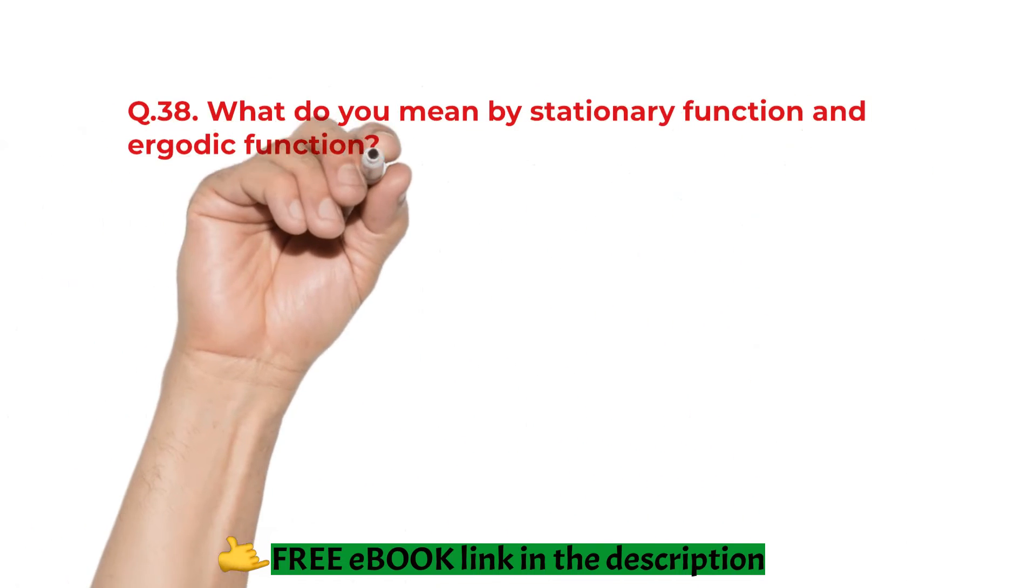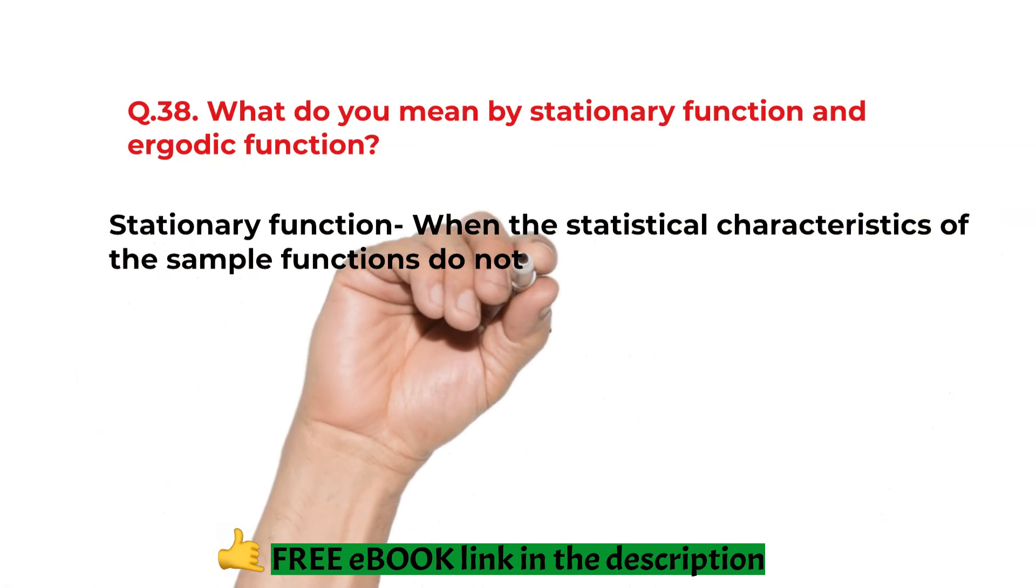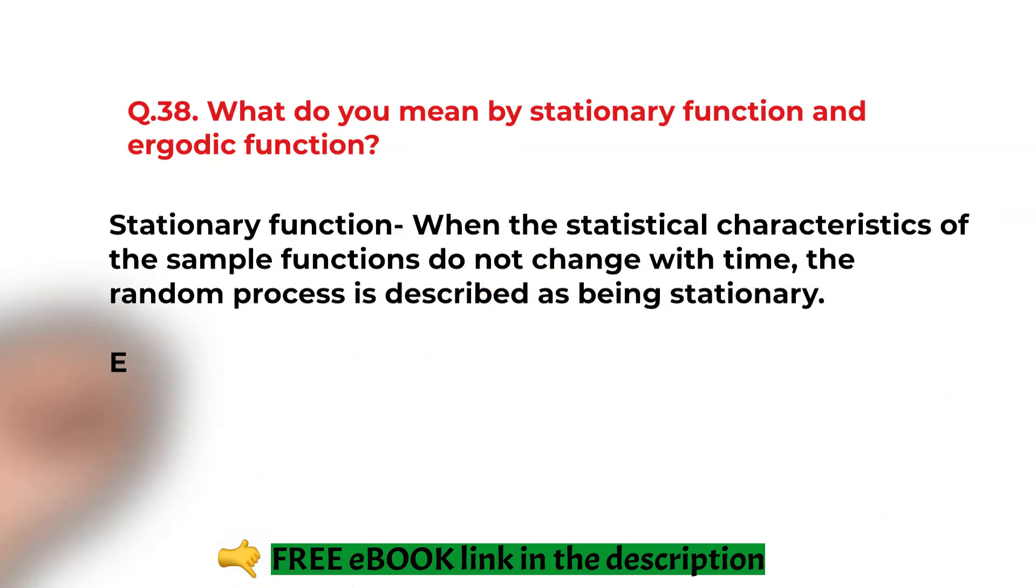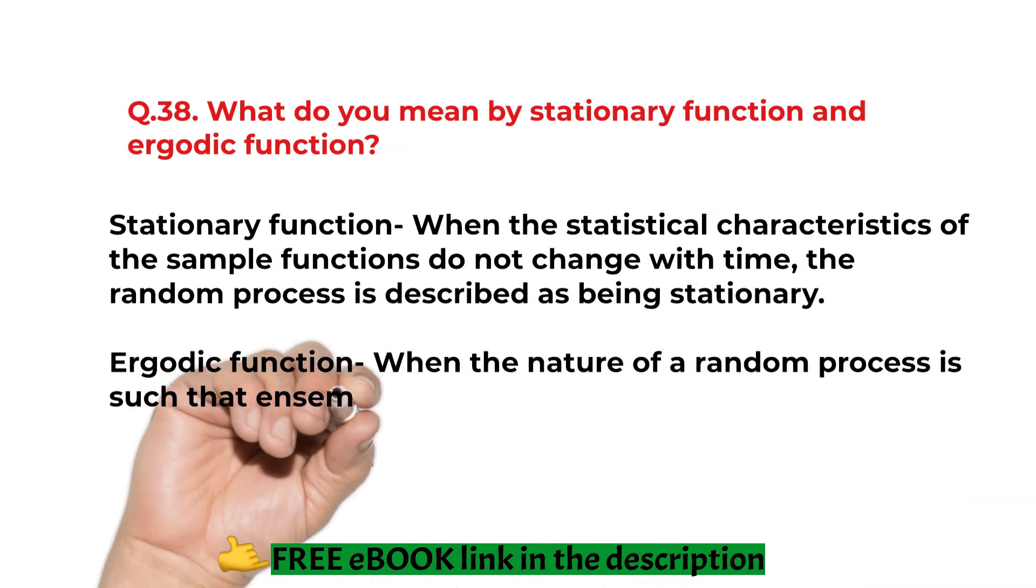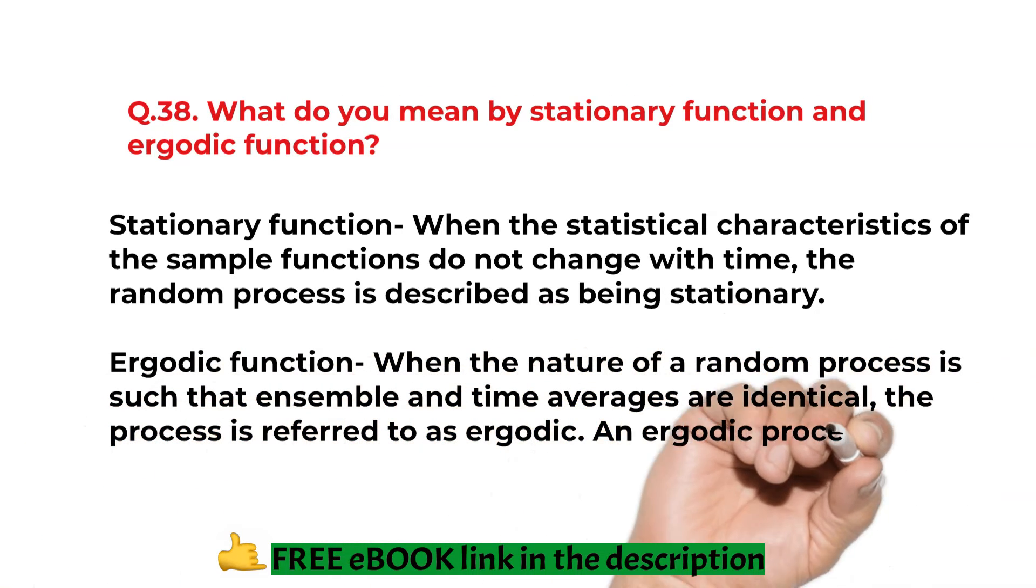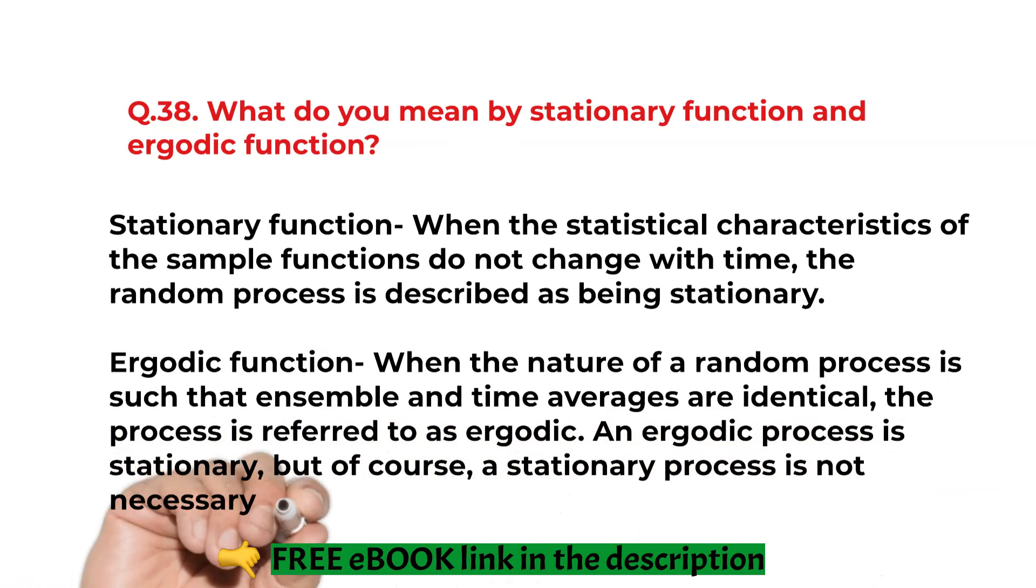What do you mean by stationary functions and ergodic function? Stationary functions: when the statistical characteristics of the sample functions do not change with time, the random process is described as being stationary. Ergodic functions: when the nature of the random processes such as the ensemble and the time averages are identical, the process is referred to as ergodic. It is stationary but of course the stationary process is not necessarily ergodic.